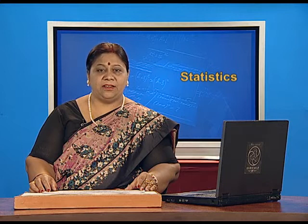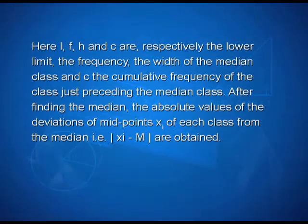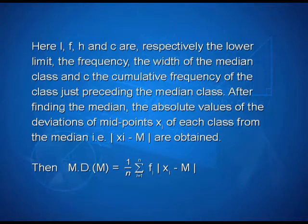After finding the median, the absolute values of the deviations of midpoints x_i of each class from the median, that is the absolute value of (x_i minus m), are obtained. Then, mean deviation about median is calculated as (1/n) into summation i ranging from 1 to n of f_i into |x_i minus m|. Now, let us solve an example to understand this.